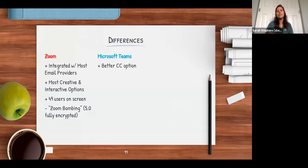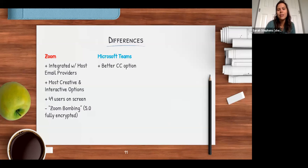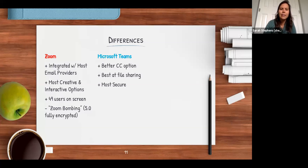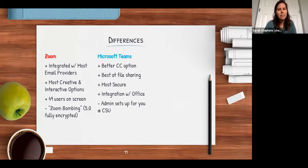Teams has a more integrated closed captioning option. As someone who is hard of hearing, I've found Teams works better than YouTube's captions. Zoom doesn't really have these features built-in — a third party needs to be incorporated. Teams is also best at file sharing, most secure, and deeply integrated with Microsoft Office. The drawbacks at CSU: you'd need an administrator to set it up, and it only accommodates about four people on screen.